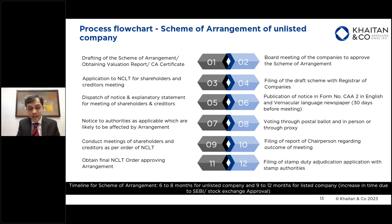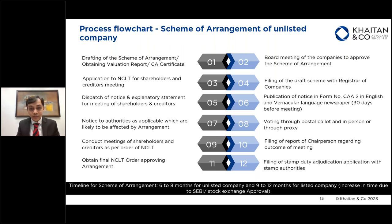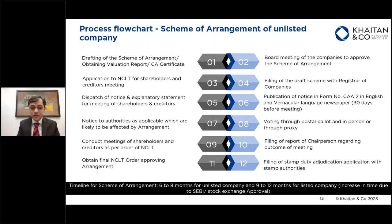Once the meeting approvals are obtained, we approach the tribunal for a second motion, which will instruct the company to send out notices to all regulators — including the Regional Director, Registrar of Companies, and any sectoral regulator if required. Once all those approvals are in place, the tribunal will approve the scheme in the final hearing, assuming there are no objections. If there are objections from any stakeholders or regulator, the tribunal will consider those objections depending on the responses filed by the company. In the case of a listed entity, additional approvals are required and the timeline can vary between 6 to 12 months.